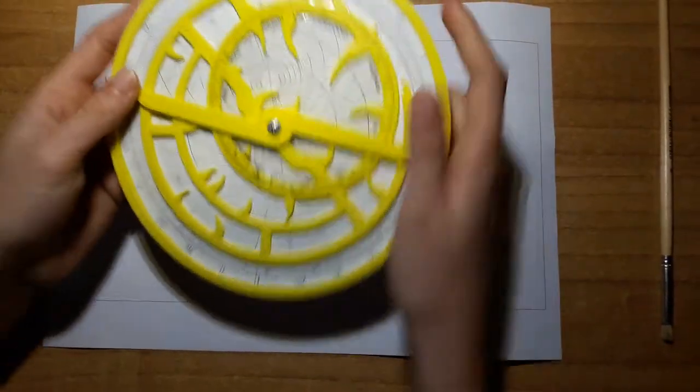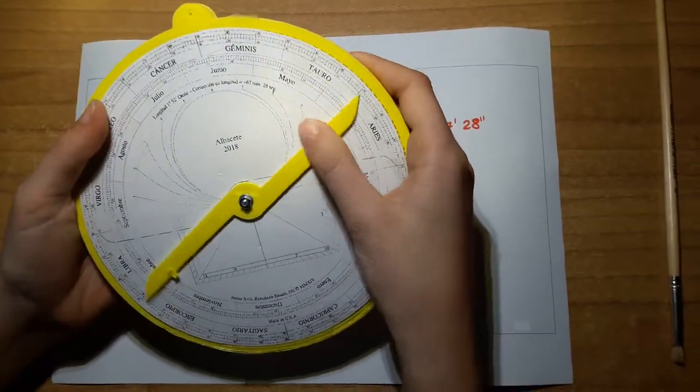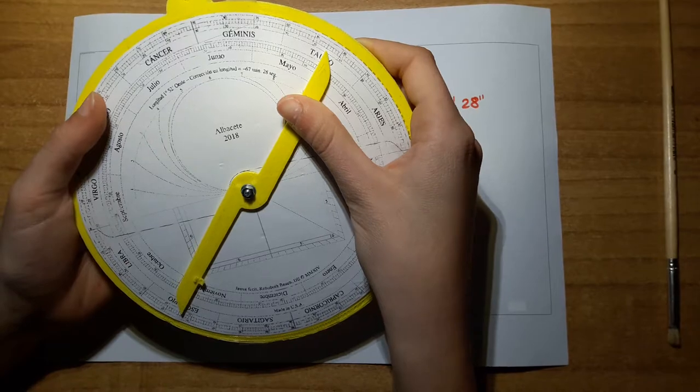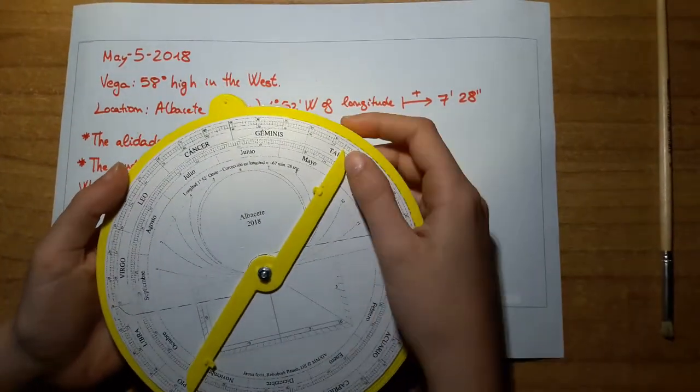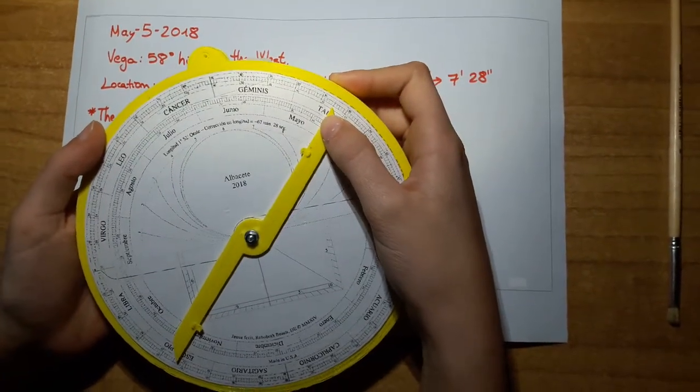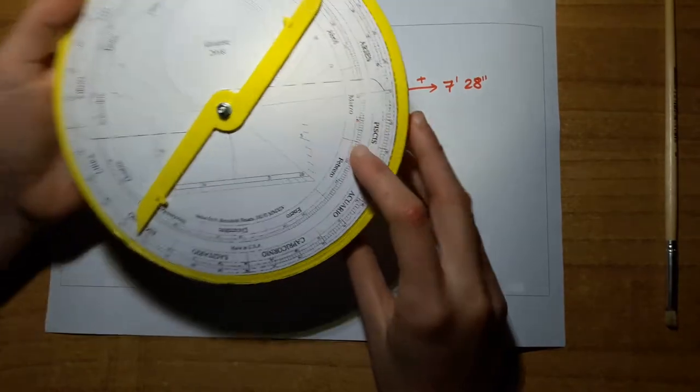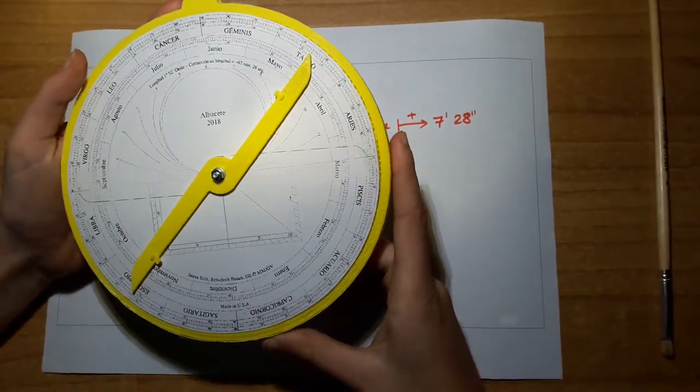Therefore, this is the astrolabe, this is the front, and this is the back. We move the holiday to May 5, and we see that the pointer points to Taurus 50. We must remember that number because we have to use it later.